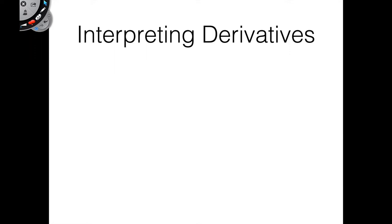Hey everyone, I hope this finds you doing well. Today we're going to be talking about how to interpret derivatives in context. We spent a lot of time talking about this idea of a derivative — what it means, where it comes from, how to calculate it using our different rules, and how to apply it to solve more complicated problems like optimization, curve sketching, and the next big one we'll talk about: related rates. So now let's take a step back and see how we interpret these things in the context of a real-world problem. Let's dive right into it with an example.